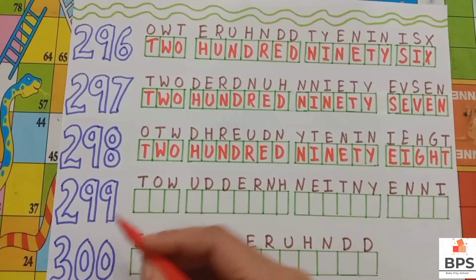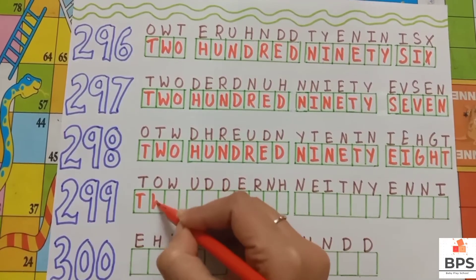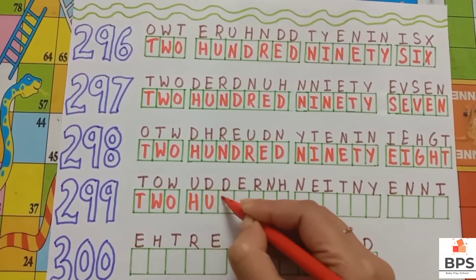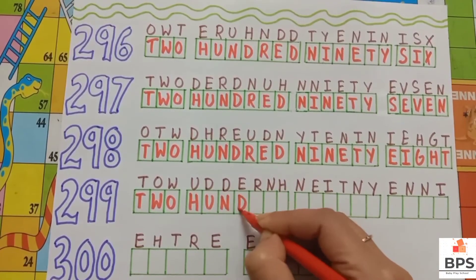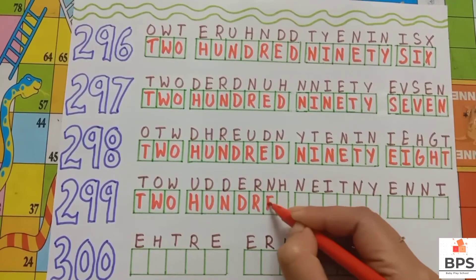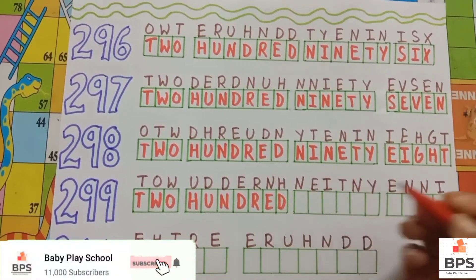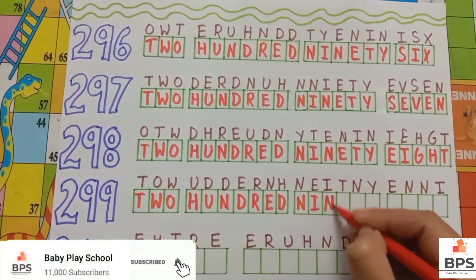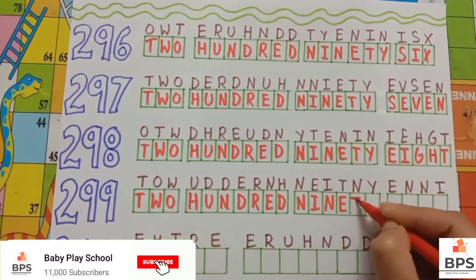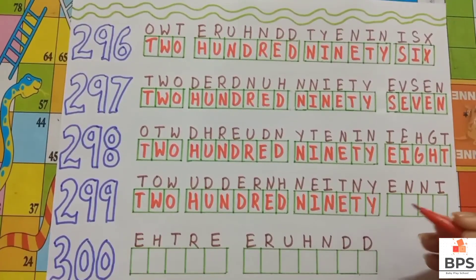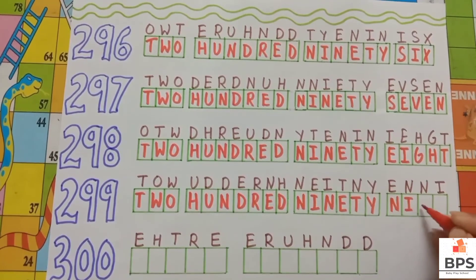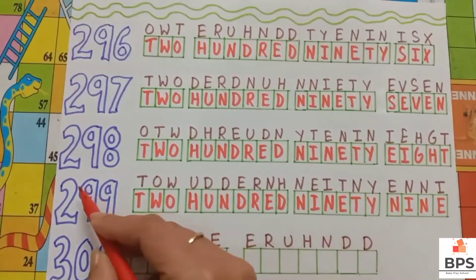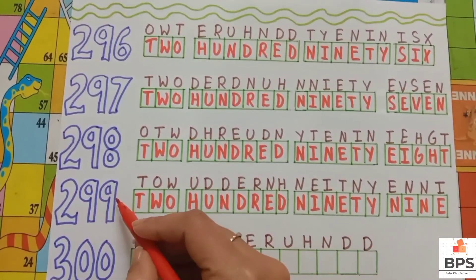Two nine nine. Two hundred ninety nine. T-W-O, two. H-U-N-D-R-E-D, hundred. N-I-N-E-T-Y, ninety. N-I-N-E, nine. Two hundred ninety nine.